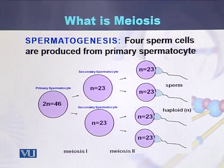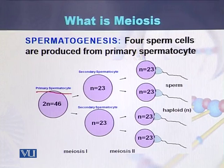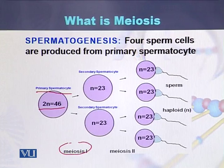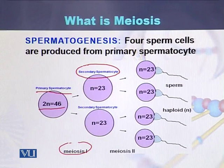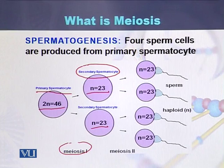Taking the example of spermatogenesis in males: in males there are primary spermatocytes. Primary spermatocytes contain 2n, meaning 46 chromosomes. As a result of meiosis 1, this primary spermatocyte is converted into 2 cells called secondary spermatocytes. In each of the secondary spermatocytes, the number of chromosomes is reduced to 23 — that is, reduced to half.